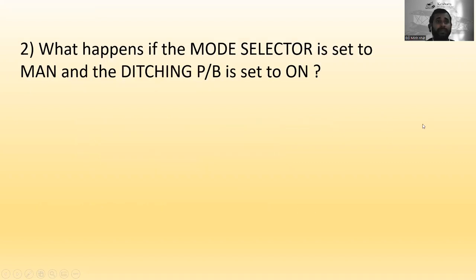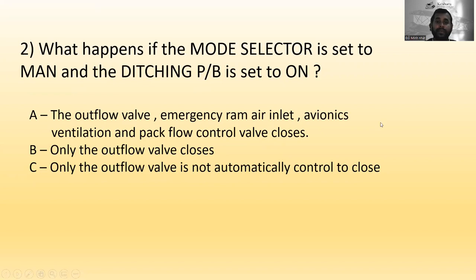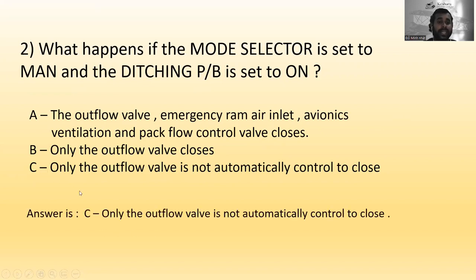Question two: What happens if the mode selector is set to manual and the ditching push button is set to ON? Answer A: the outflow valve, emergency ram-air inlet, avionic ventilation, and pack flow control valve all close. Answer B: only the outflow valve closes. Answer C: the outflow valve is not automatically controlled to close. The correct answer is C.